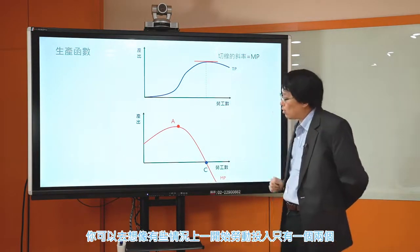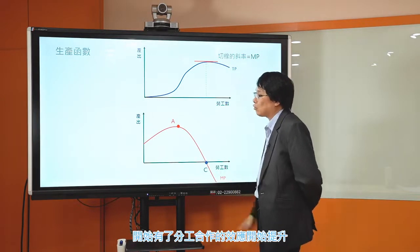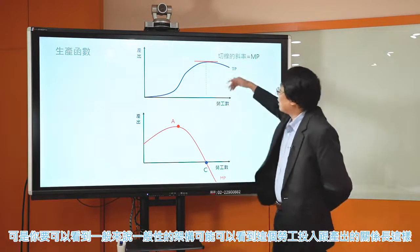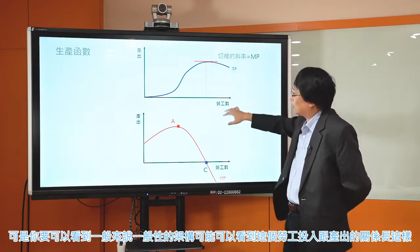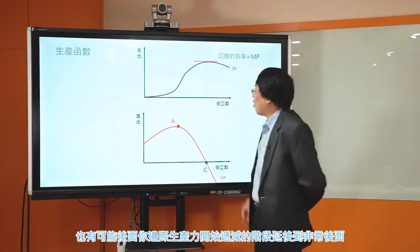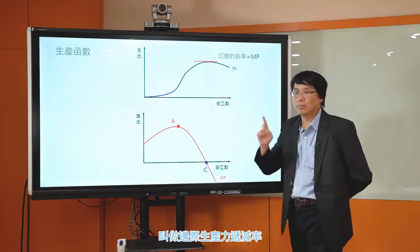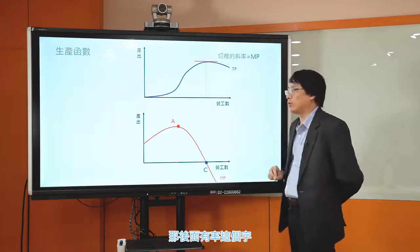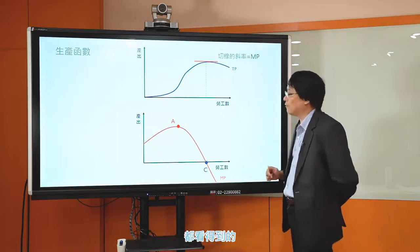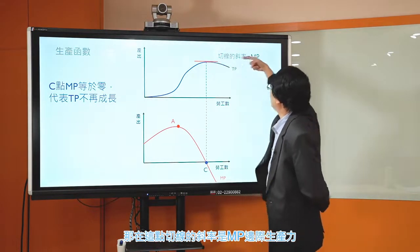你可以看到這個總生產函數的斜率如何變化：剛開始比較平坦，慢慢的越來越陡，後來慢慢的又變成平坦，然後變成是負的。這代表邊際生產力一開始比較小，後來變得越來越高，後來開始遞減到這邊變成零，甚至變成負的。這個東西不是隨便亂畫的，是根據邊際生產力遞減律這件事情，這個我們在下一講會仔細細講。